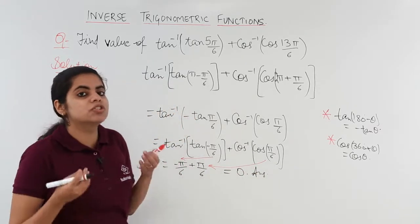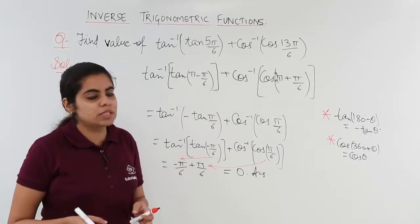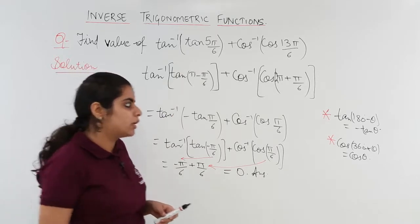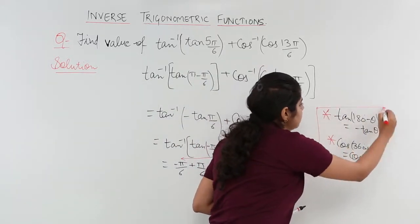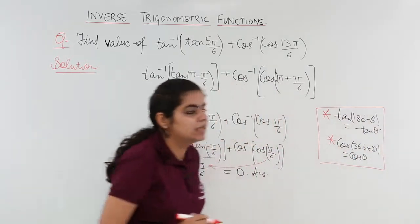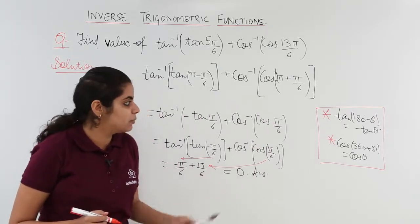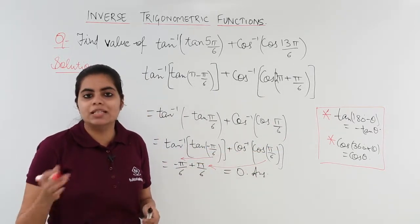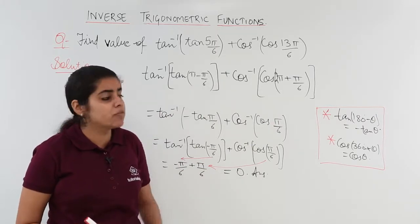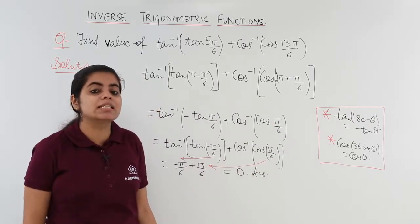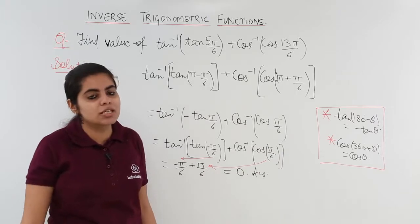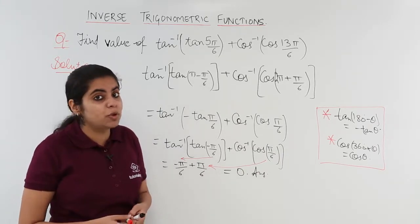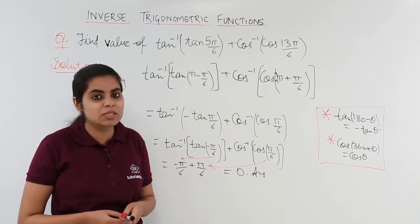What did we do in this question? We just used the knowledge of principal value branch, solved it accordingly and used two important things that we learnt in our class 11th: tan 180 minus theta and cos 360 plus theta. Tan 180 minus theta lies in the second quadrant so it makes tan negative. Cos 360 plus theta lies again in the first quadrant so it makes cos positive. In the next video we will be seeing one more important problem based on the concept of principal value branch.